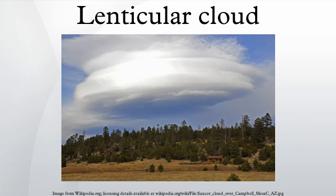The clouds have been mistaken for UFOs, particularly the round flying saucer type, because these clouds have a characteristic lens appearance and smooth saucer-like shape. Also, because lenticular clouds generally do not form over low-lying or flat terrain, many people have never seen one and are not aware clouds with that shape can exist.